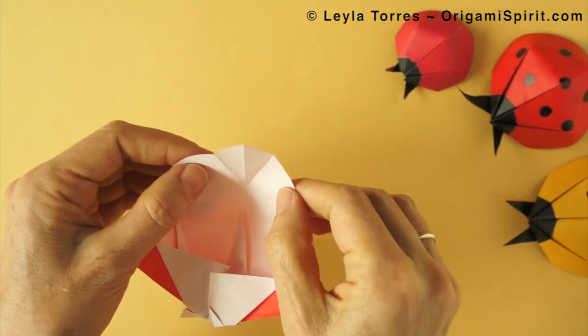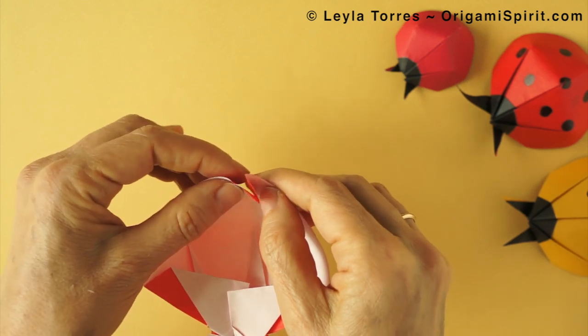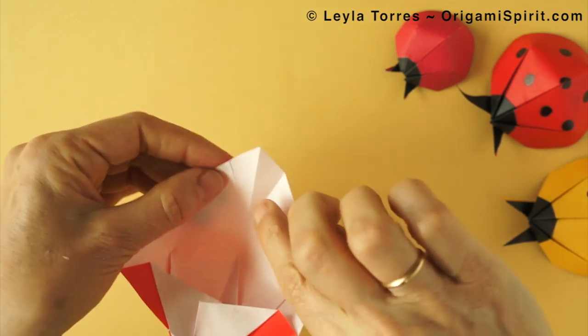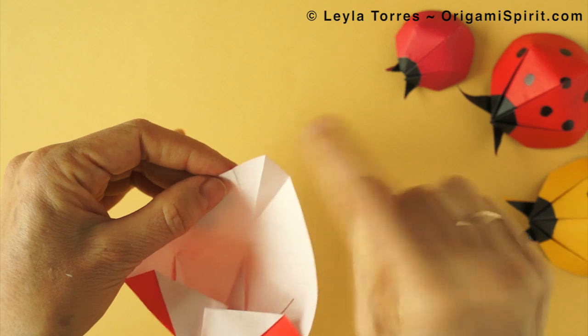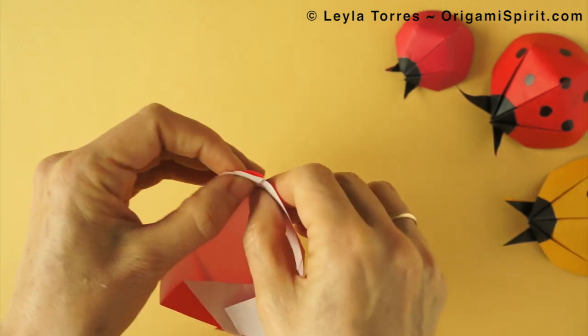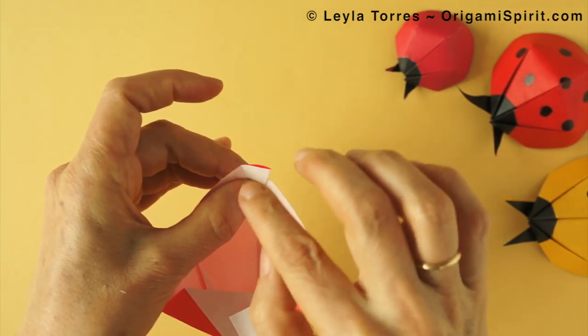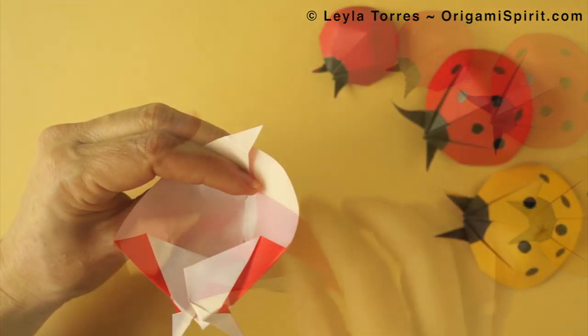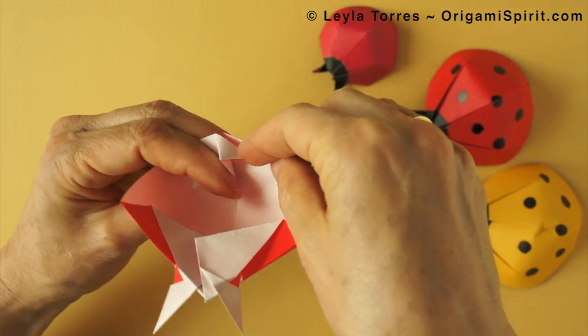And we set this crease at the back so that we lock. Mountain fold. Valley fold. We have this little triangular flap. Fold it to the back. It's going to be behind here.